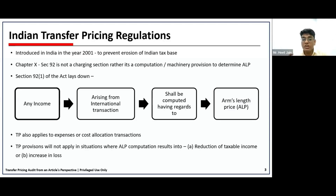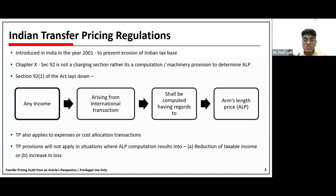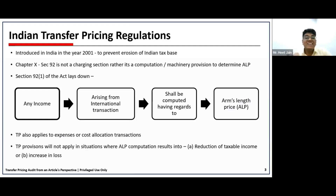Three important words we need to understand are: income, international transaction, and arm's length price. Transfer pricing is not only applicable to income but also to expenses and cost allocation transactions. When expenses are overpaid, it indirectly reduces the income offered to tax by the assessee, and hence that is also to be noted.